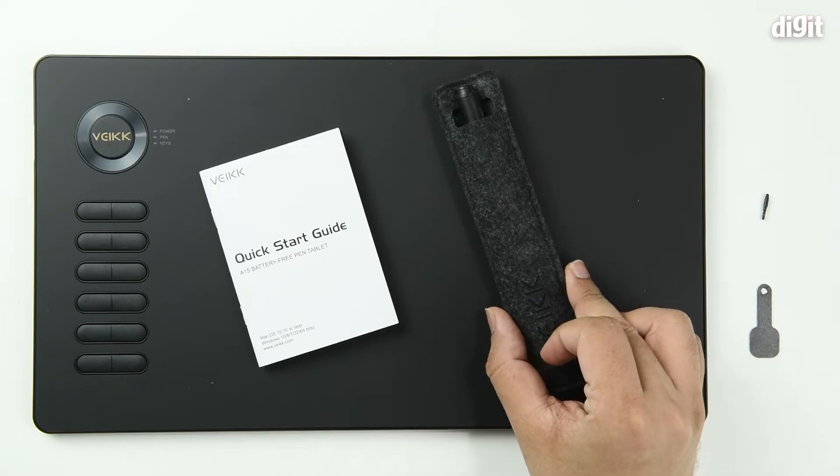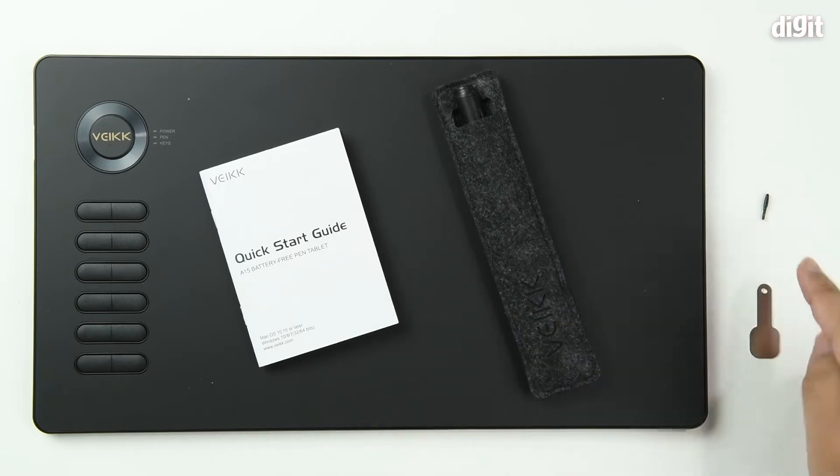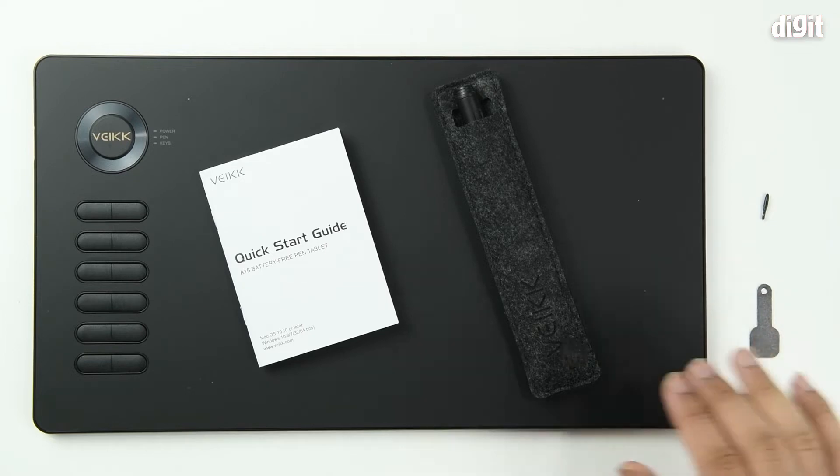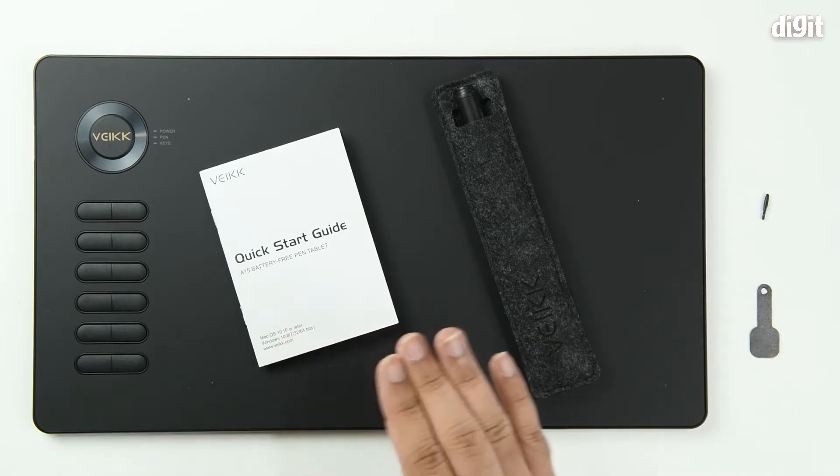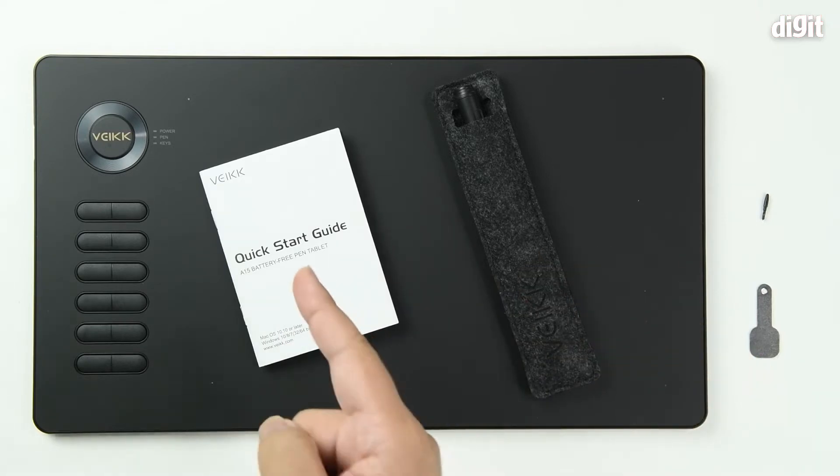Now we have the pen in its casing, a replacement nib, and the nib replacement tool. You should always read through the user guide to understand exactly how to operate your device and instructions for doing the same are also found in the quick start guide.